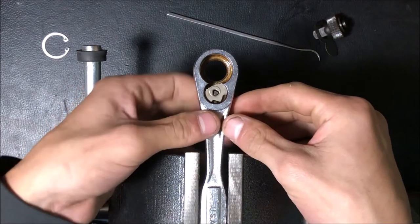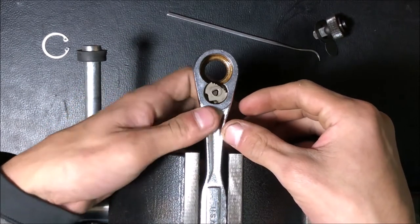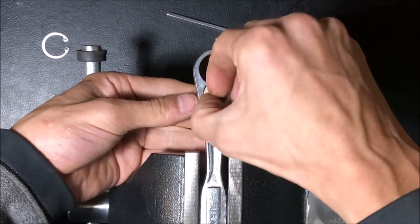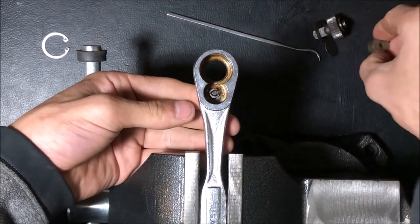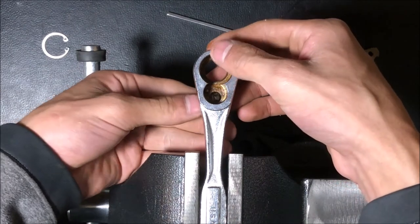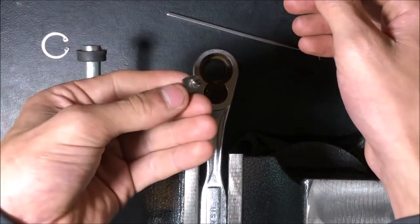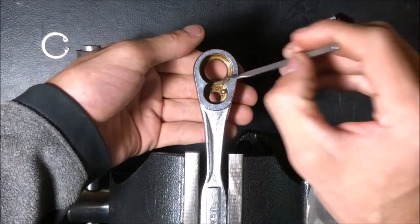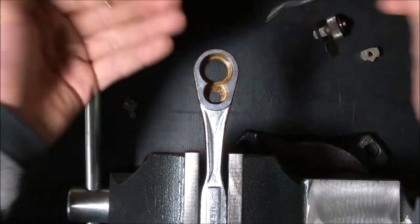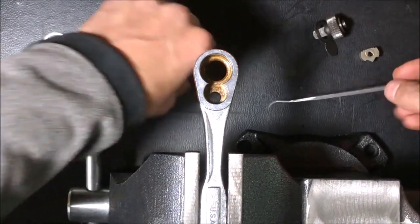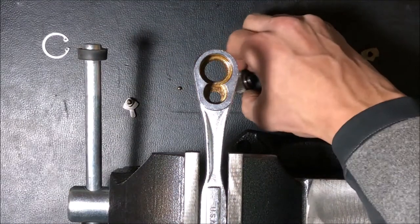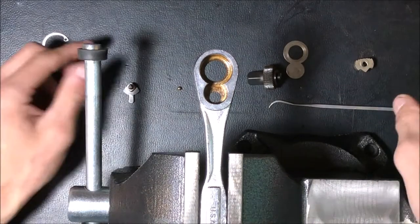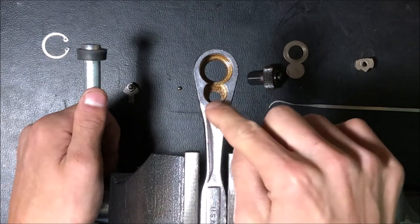Then we have the switch, just like that. Then we can pull this whole assembly out. So there's the pieces, there's the switch, then the ball. And that's every piece inside of this ratchet. And then to reassemble this ratchet, there's also a spring right here.